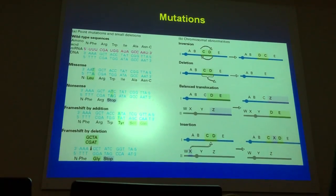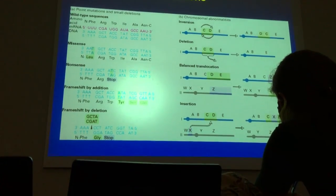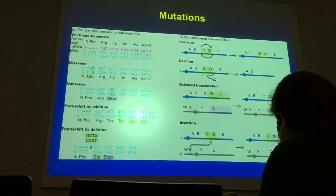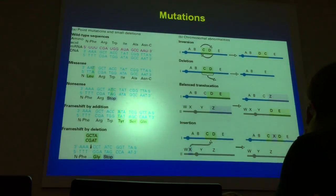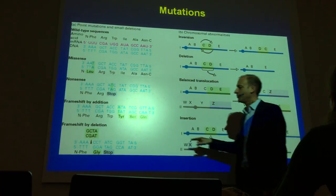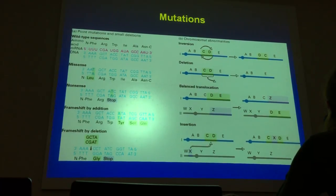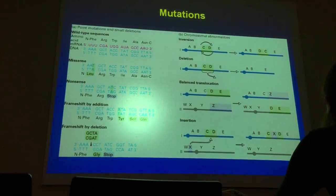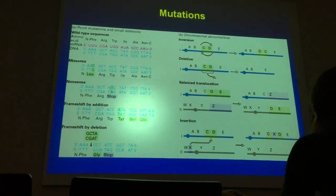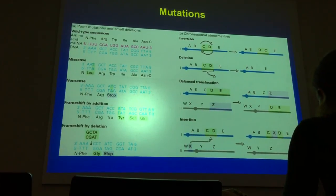Mutations can occur by inversion, deletion, translocation, or insertion of nucleotides — different ways a mutation can develop in a cell such that the amino acid sequence becomes altered. As a consequence, a mutation can be silent with no biological effect, or it can be an activating mutation where the molecule becomes activated without any upstream signaling — it is just active by itself. We have many good examples of activating mutations in tumor biology, and there can also be inactivating mutations.